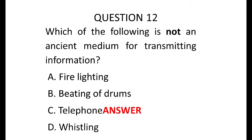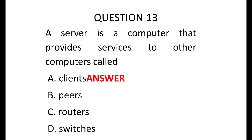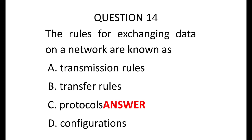Which of the following is not an ancient medium of transmitting information? The correct answer is C — telephone. Telephone is a modern way of transmitting information; the others are ancient methods. Question 13 says: the server is a computer that provides services to other computers, and those other computers are called the client.